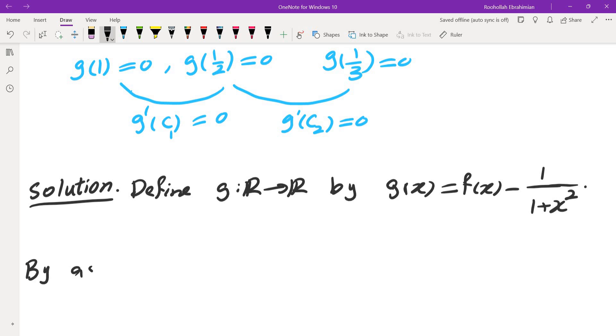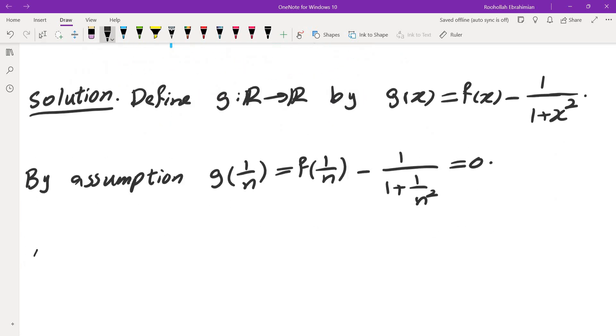By assumption g of 1 over n is going to be f of 1 over n minus 1 over 1 plus 1 over n squared which is 0. And then since 1 over 1 plus x squared is infinitely differentiable, c infinity, so is g.